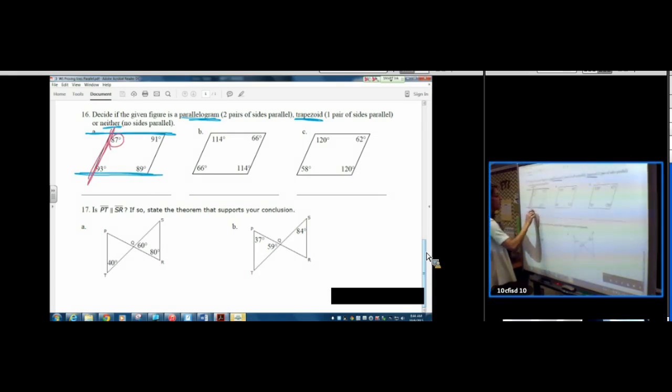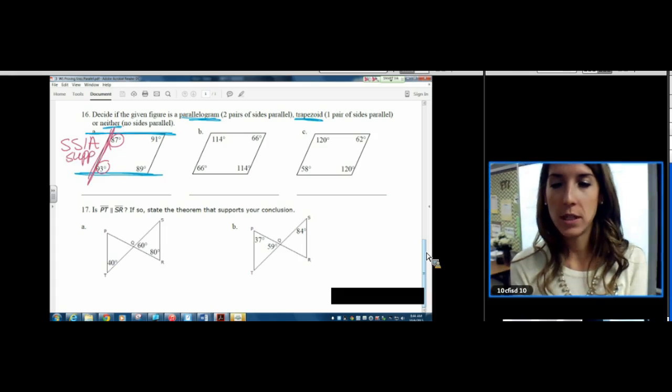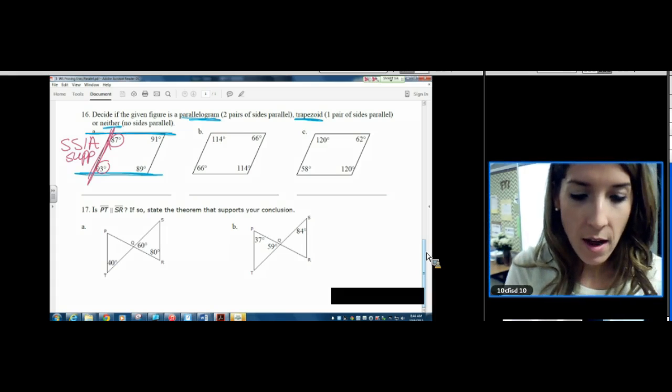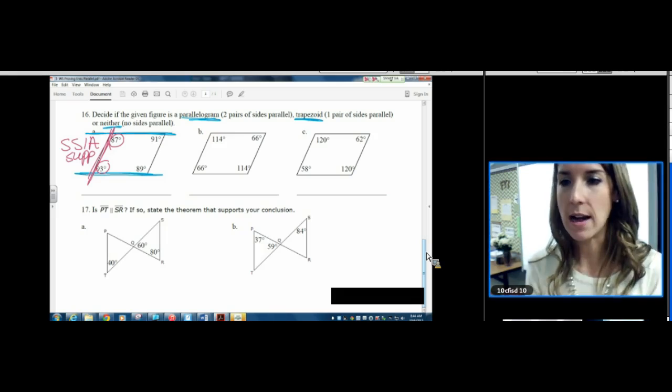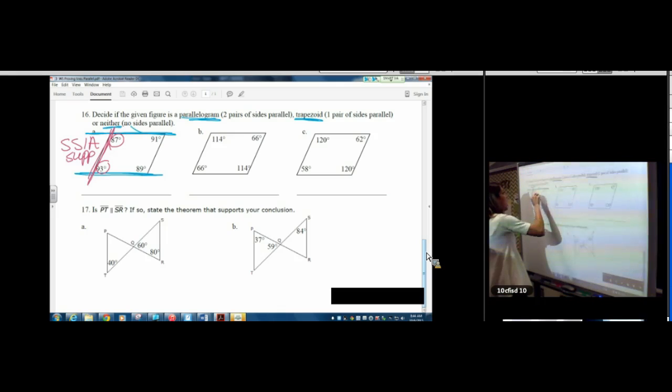Pick any transversal you want. Now take your angles, and we know same side interior angles are supposed to be supplementary. So we want those two to be supplementary. So we go to our calculator and we're like, hmm, 87 plus 93. Oh, it adds up to 180. So we have proved that the top is parallel to the bottom.